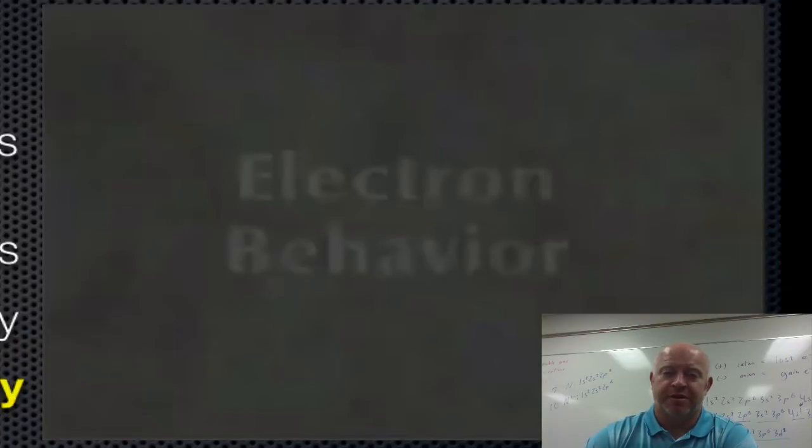Now, the last piece of this puzzle comes down to a guy named Werner Heisenberg. And Werner Heisenberg came up with what we call the uncertainty principle. And the uncertainty principle tells us that we cannot determine both the location and speed of an electron at the same time.